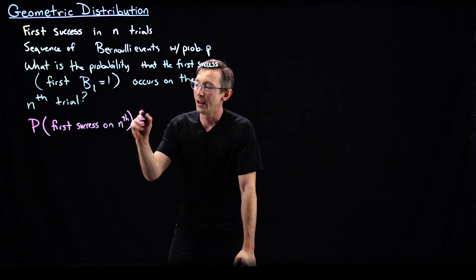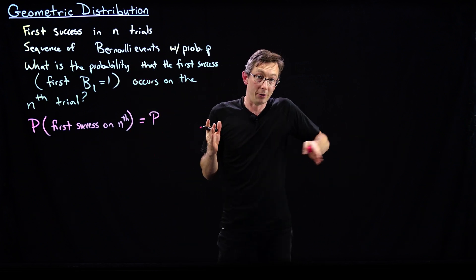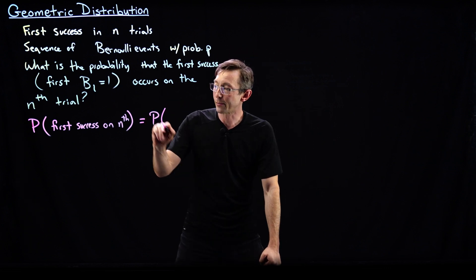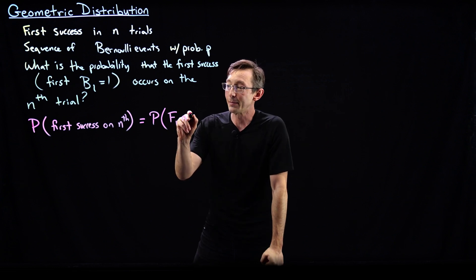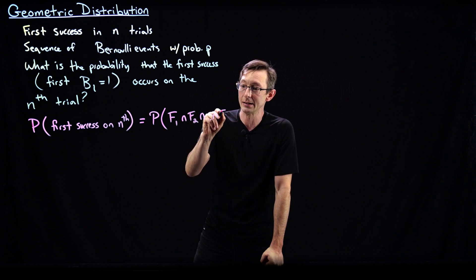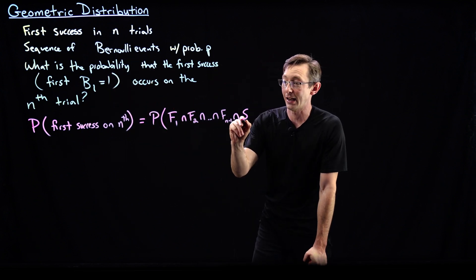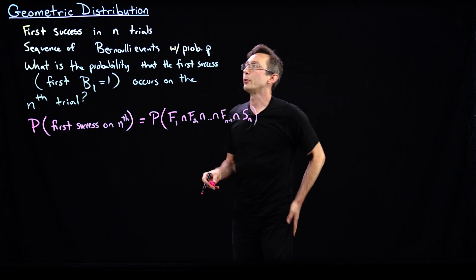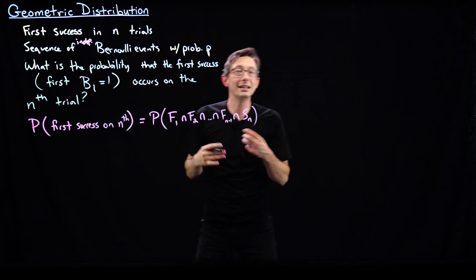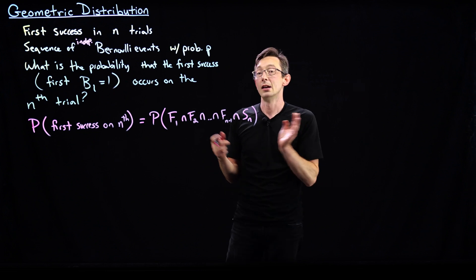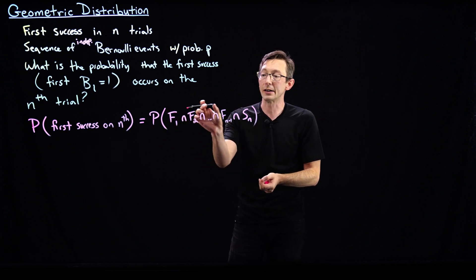The way that can happen is that I have to fail — all my Bernoulli events have to be zeros, failures, until the nth trial. So the probability that my first trial is a failure, and my second Bernoulli event is a failure, and so on, and my (n-1)th Bernoulli event is a failure, and my nth trial is a success. And remember, these are independent Bernoulli trials — like flipping a coin, rolling dice, or playing roulette. So the probability of all of these things happening is the product of the probability of each of them happening.